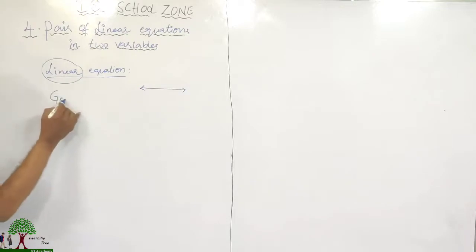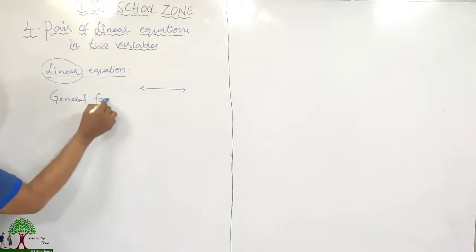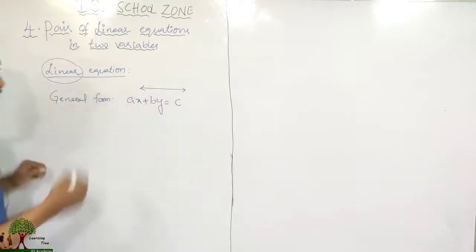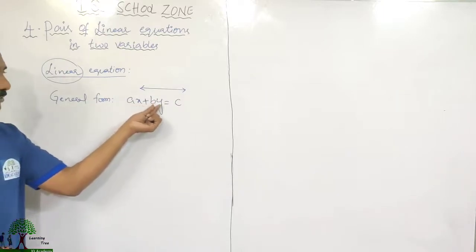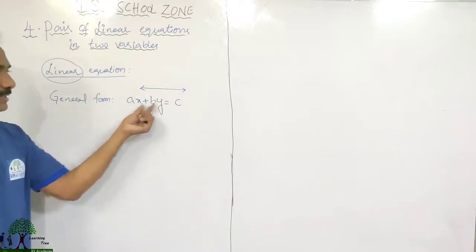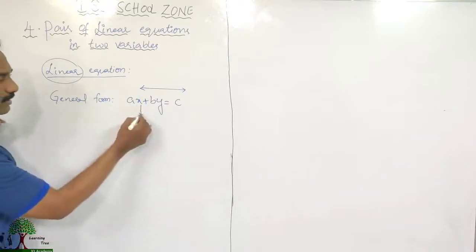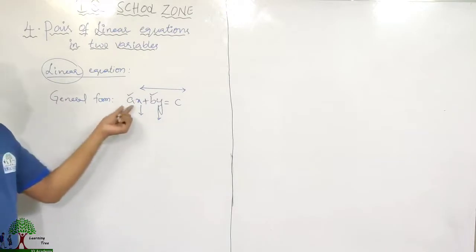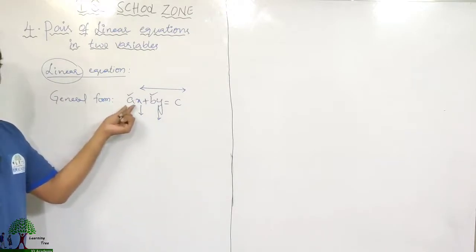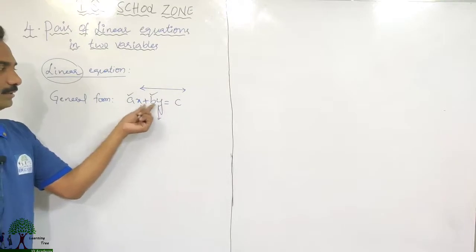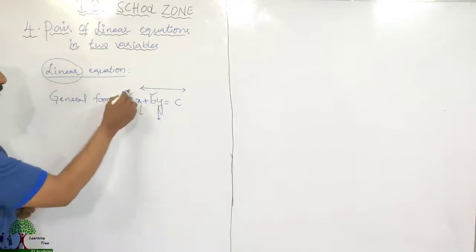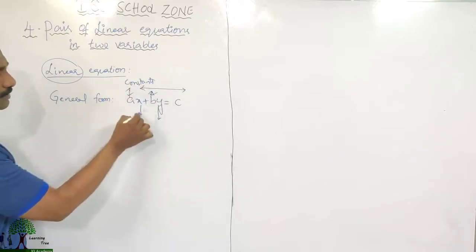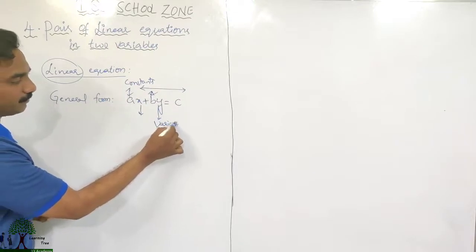The general form of a linear equation in two variables is AX plus BY equals C. Here X and Y are the two variables. A and B are called constant terms — A is the coefficient of X and B is the coefficient of Y. X, Y, Z are called variables.